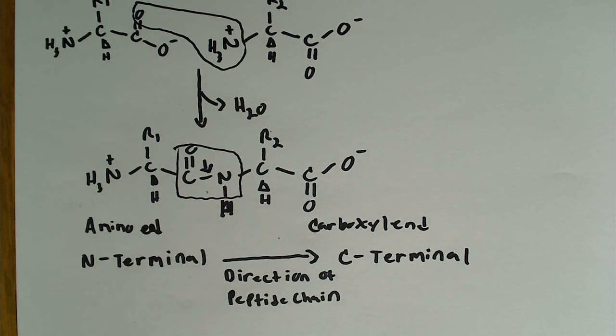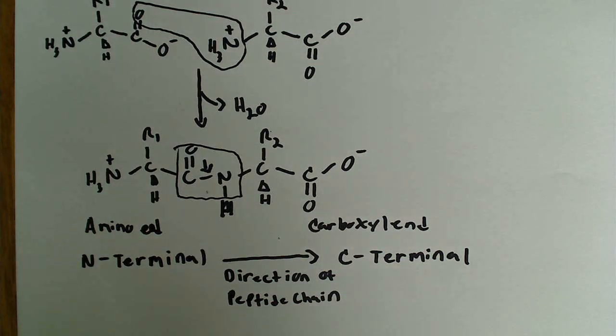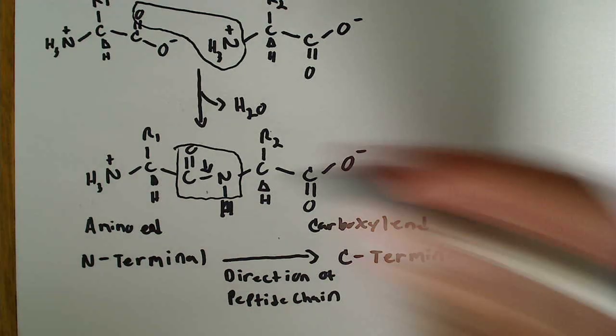And in proteins, upward to 100 amino acids are so joined to form polypeptide chains. Essentially, a polypeptide chain is many amino acids linked together by these amide bonds.